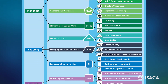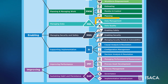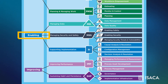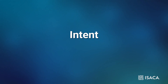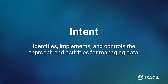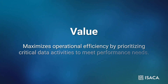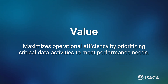This practice area is one of two in the managing data capability area as part of the enabling category. Looking at the intent and value statements of this practice area, we find the following: it identifies, implements, and controls the approach and activities for managing data, and maximizes operational efficiency by prioritizing critical data activities to meet performance needs.